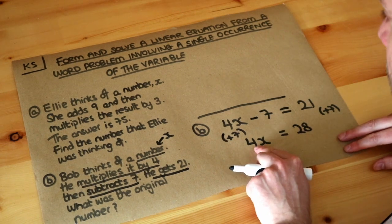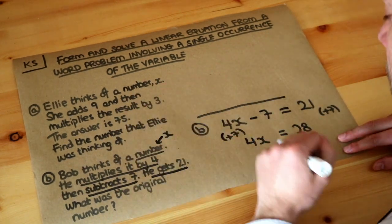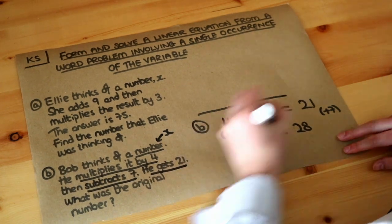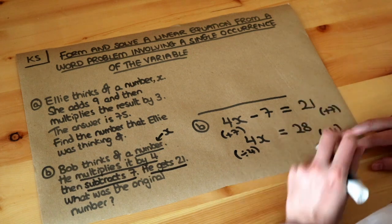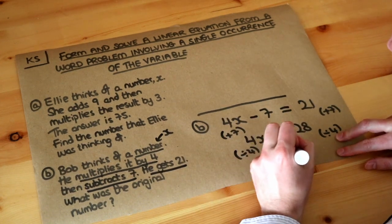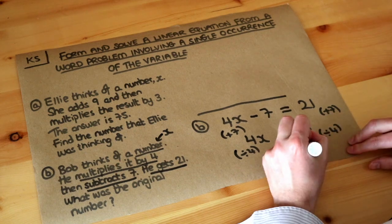Then, x has been multiplied by 4. We want to get rid of the times 4 to leave x on its own, so we do the opposite, which is to divide by 4. The divide by 4 cancels out the times by 4, leaving x equals 28 divided by 4, which is 7.